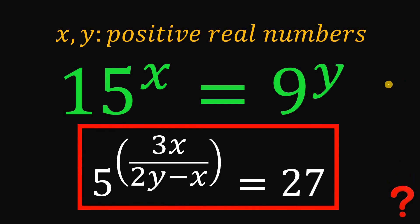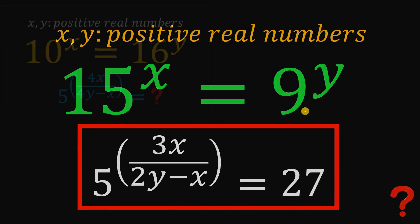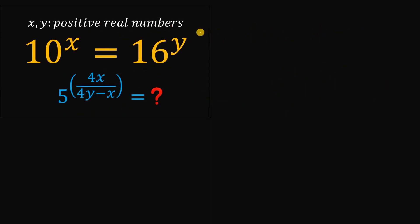For your practice, try this question: x and y are positive real numbers given the equation 10 raised to the power of x equals 16 raised to the power of y. Your goal is to find the numerical value of 5 raised to the power of 4x over 4y minus x. Don't forget to show your solution and comment your answer in the comment section below.